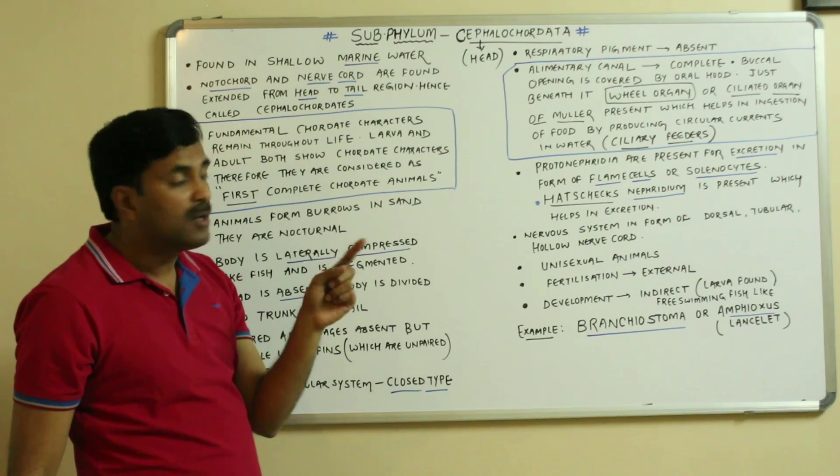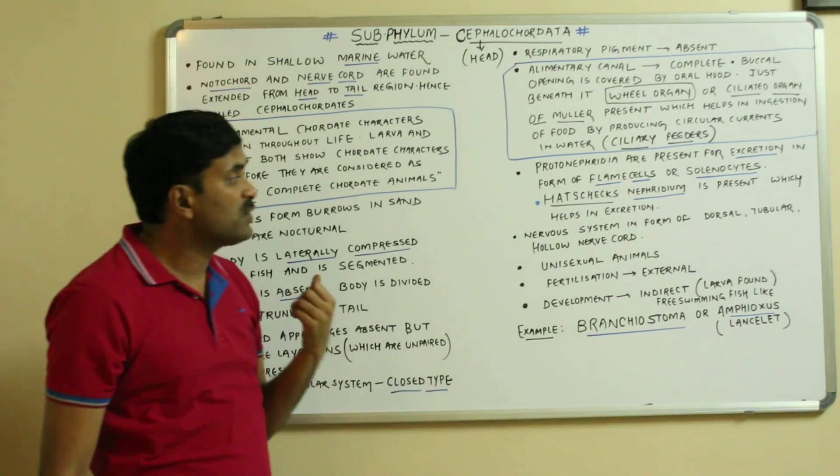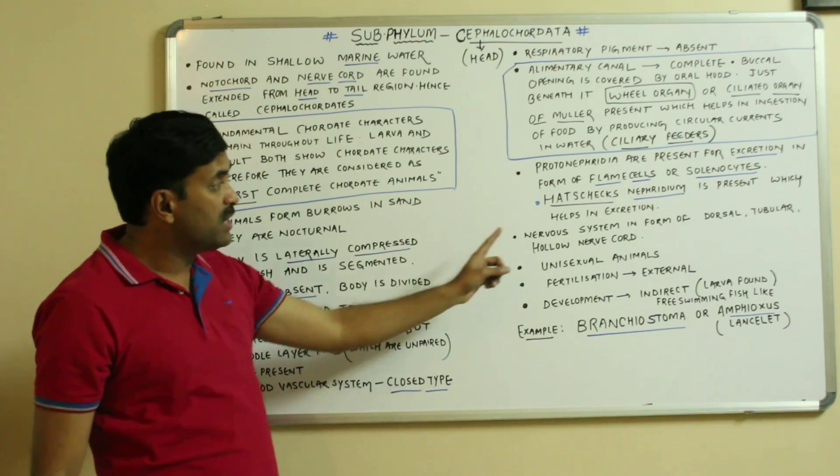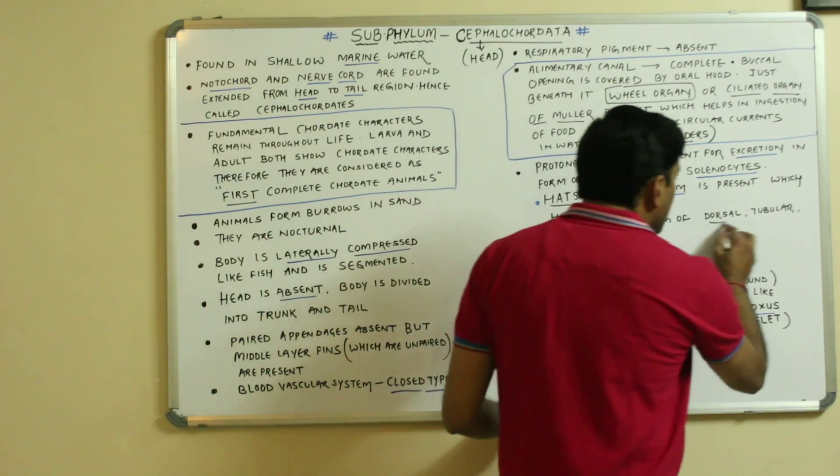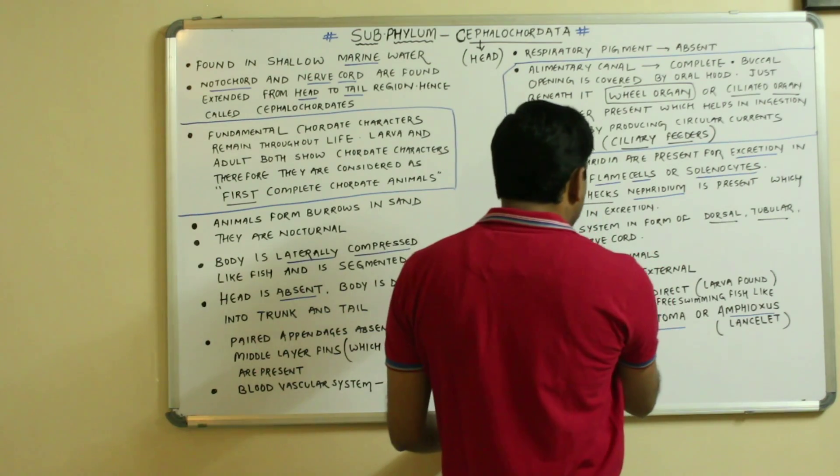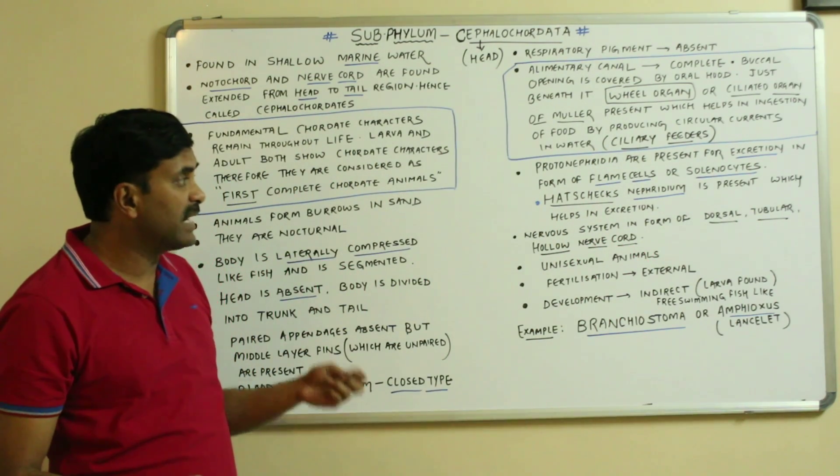Additionally, head nephridium is present which helps in excretion. The nervous system is in the form of dorsal tubular hollow nerve cord, which is the primary character of chordates.